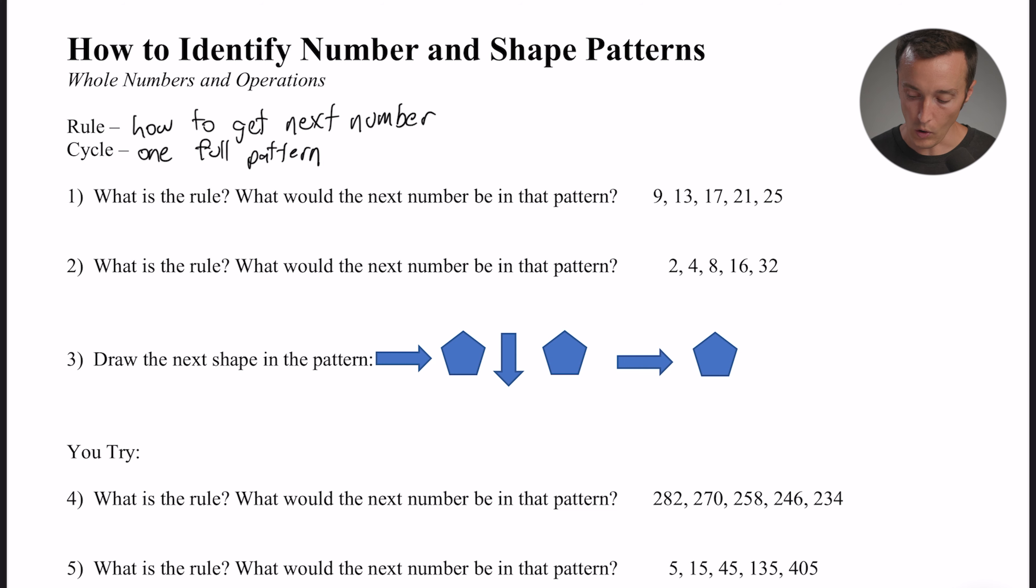So let's look at number one and let's just jump straight to the numbers: 9, 13, 17, 21, 25. The first part of this question says what is the rule? In other words, how are we getting from the 9 to the 13 to the 17 to the 21 to the 25?